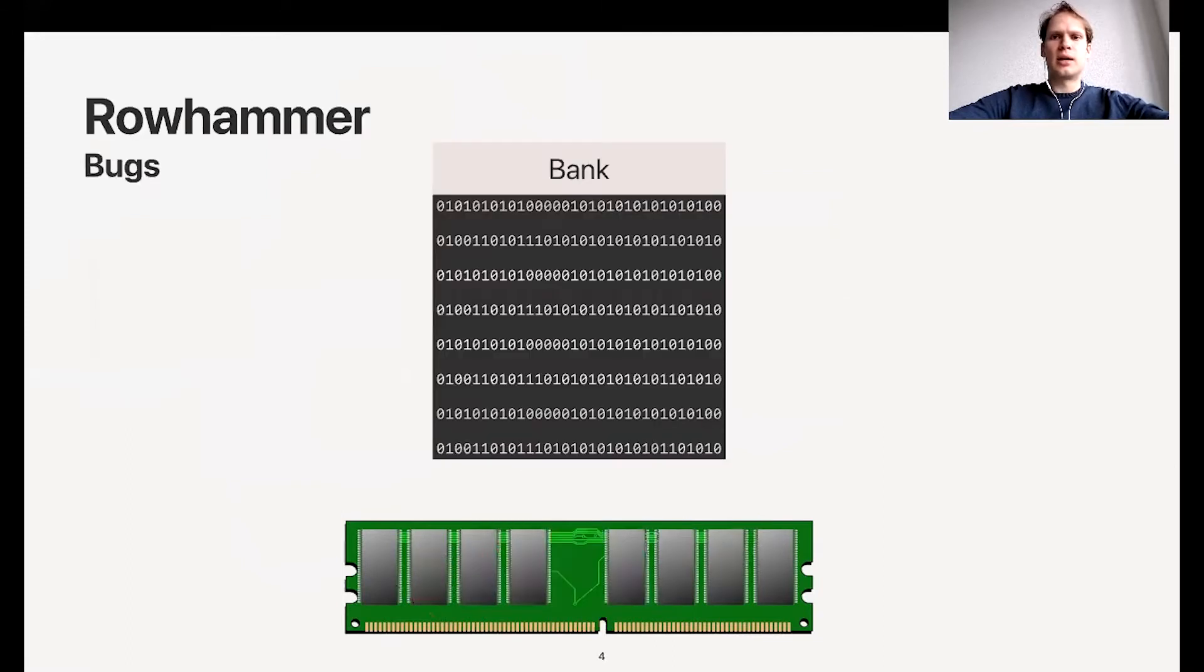First, something about Rowhammer bugs and TRR. Inside the memory module you have banks that store your data. The original Rowhammer attack works as follows: we have a double-sided pair with two red rows and one row in the middle. We will repeatedly read these red rows, and this causes them to be activated.